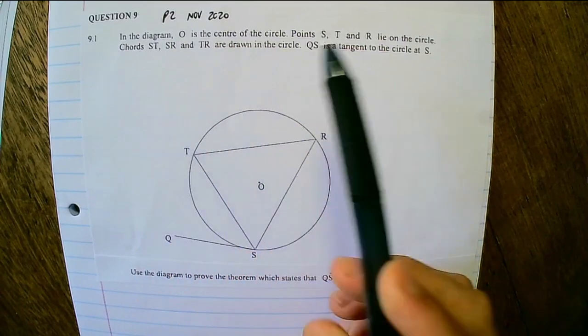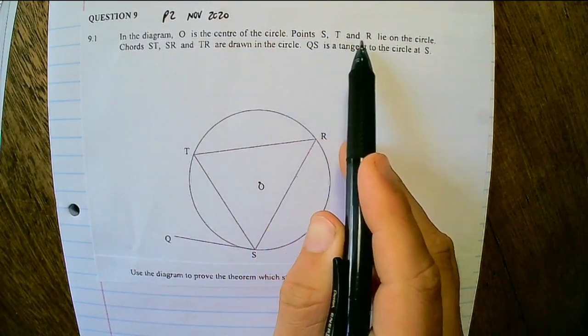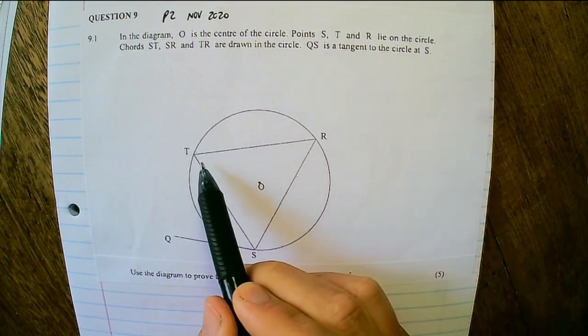In a diagram, O is the center of the circle. Points S, T and R lie on the circle.